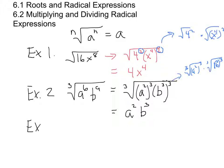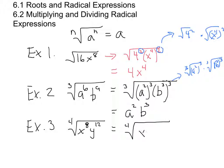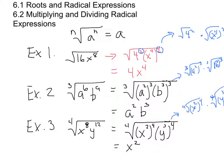The last example is the fourth root of x to the eighth times y to the twelfth. We rewrite the radicand so that we have fourth-power exponents: x squared to the fourth, and y cubed to the fourth. The fourth root of x squared to the fourth equals x squared, and the fourth root of y cubed to the fourth equals y cubed. Don't worry about determining if y cubed is positive or not — we always assume the root is positive.